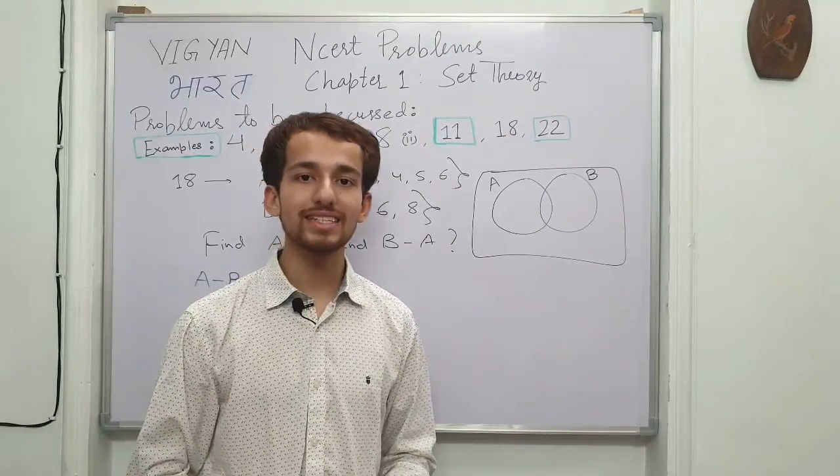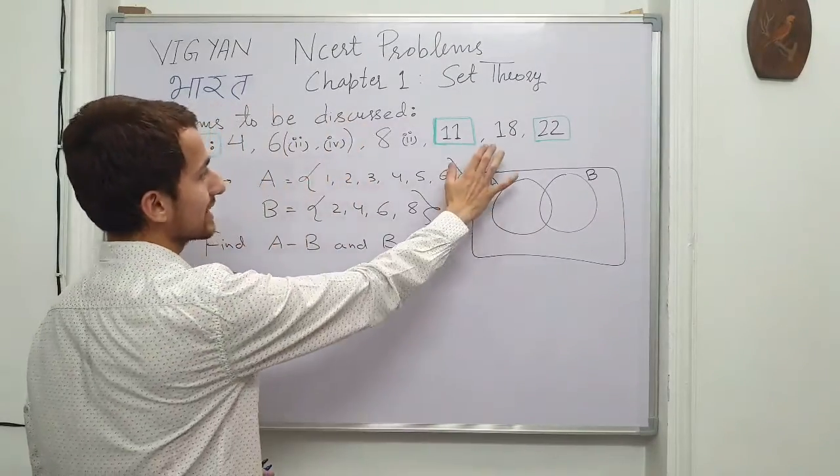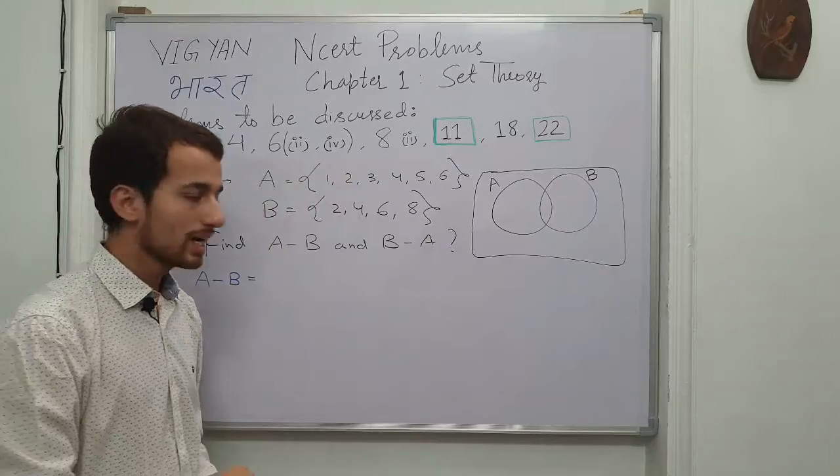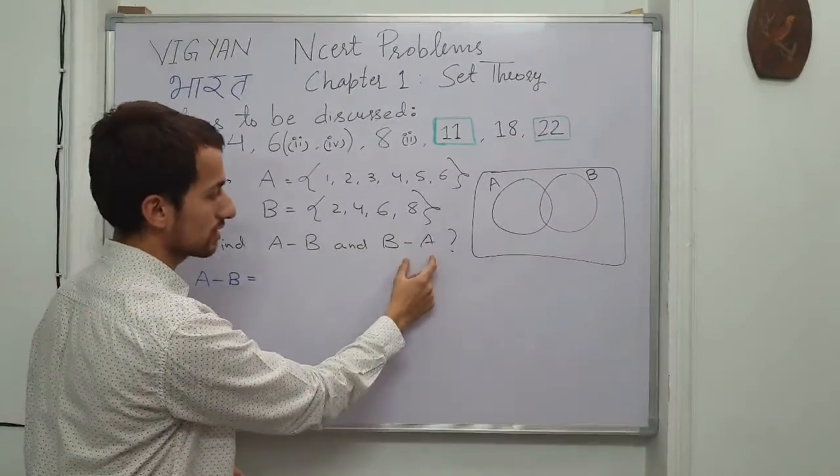Now let's move forward to the next example which is example number 18. We are given two sets A and B and we have to find the set difference A-B and B-A.